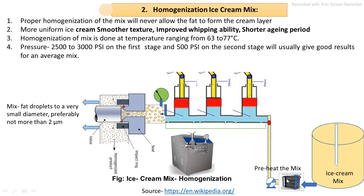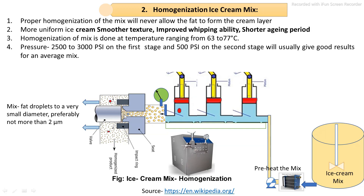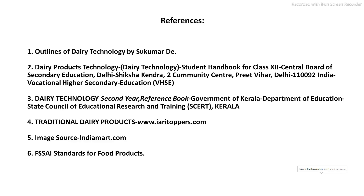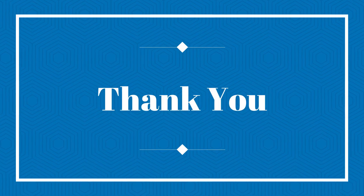The pre-mix is passed into the plate heat exchanger, then into a reciprocating pump to create high pressure. In the two-stage pressure homogenizer, the first stage operates at 2500 to 3000 psi and the second stage at 500 psi. The shearing force and cavitation result in reducing the fat globules to up to 2 microns. The remaining steps will be seen in the next lecture.